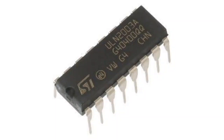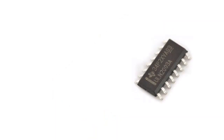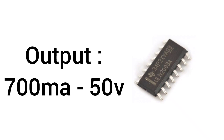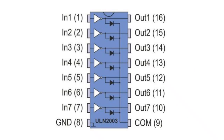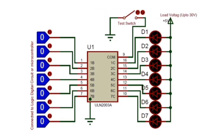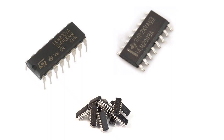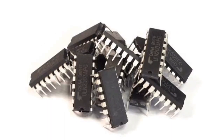The ULN-2003 is an array of 7 NPN Darlington transistors capable of 500 mA, 50 V output. ULN-2003 features common cathode flyback diodes for switching inductive loads. It can come in PDIP, SOIC, SOP, or TSSOP packaging. In the same family are ULN-2002A, ULN-2004A, as well as ULQ-2003A and ULQ-2004A, designed for different logic input levels.